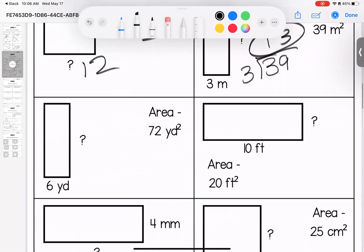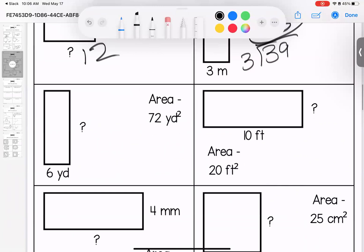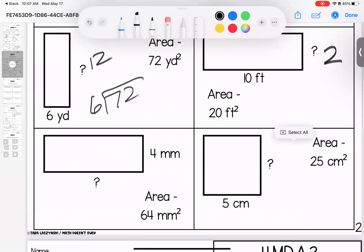And I would get 13 here. 72 divided by 6 is going to give me a missing piece of 12. 20 divided by 10, missing piece of 2. 64 divided by 4, missing piece of 16.